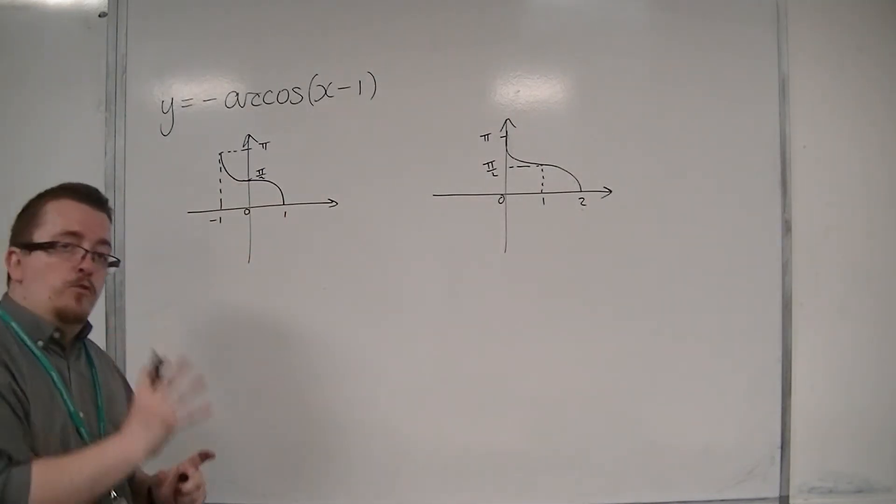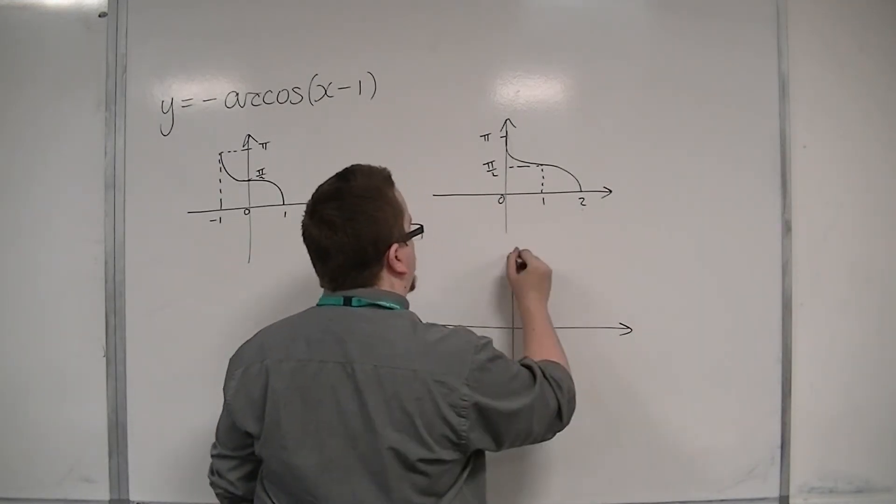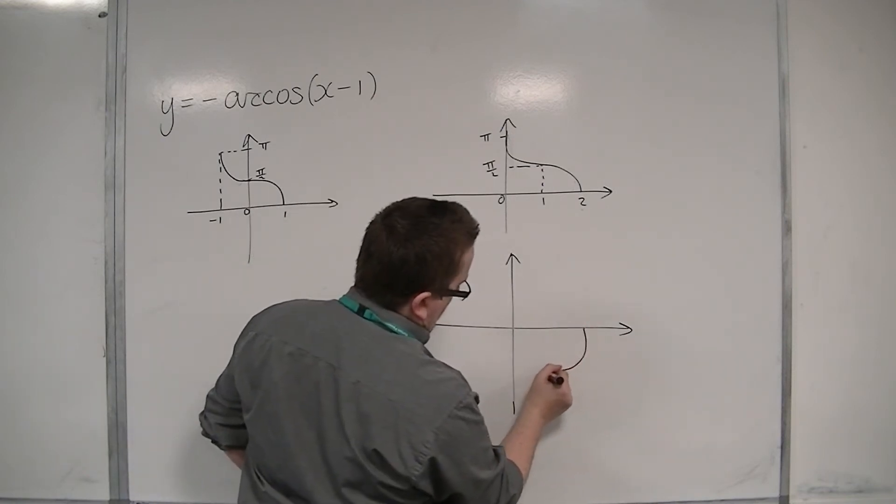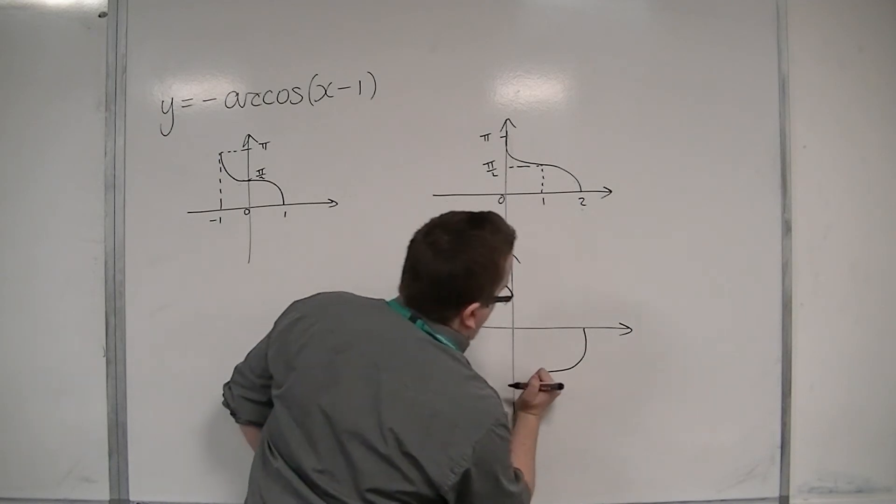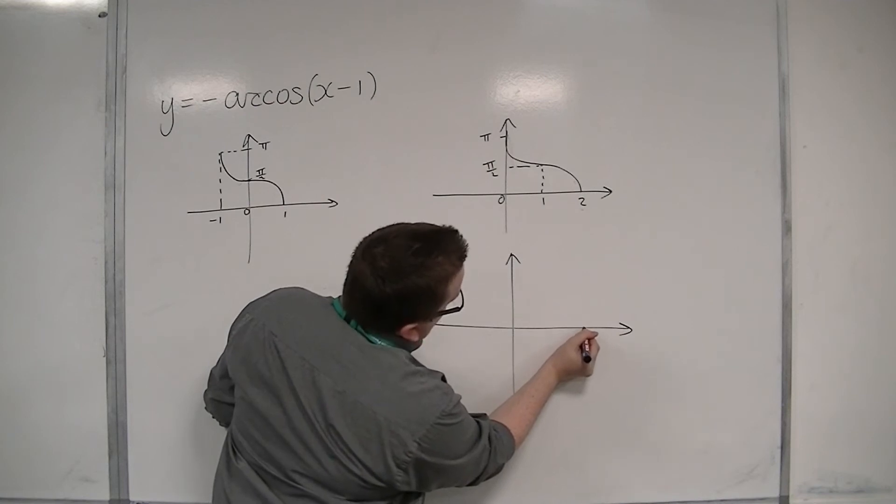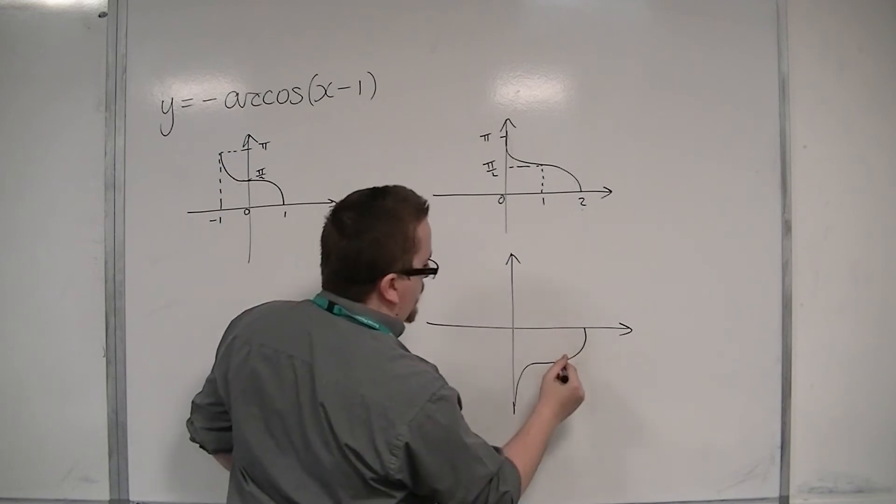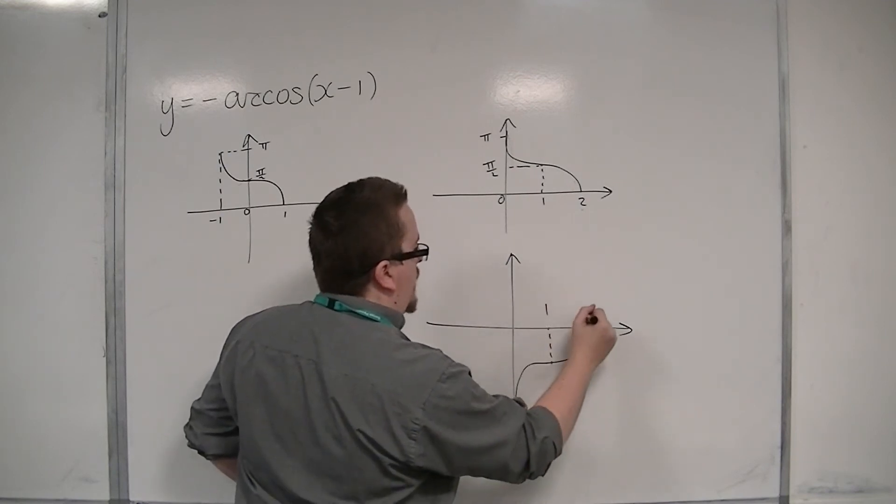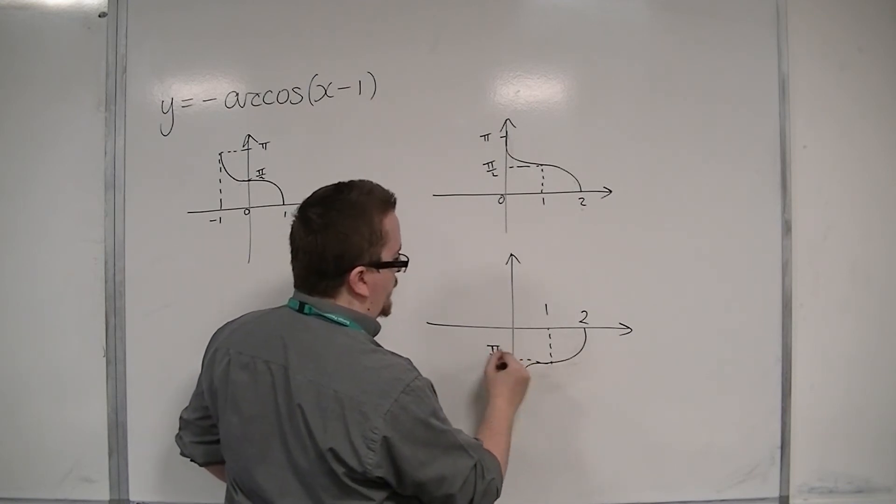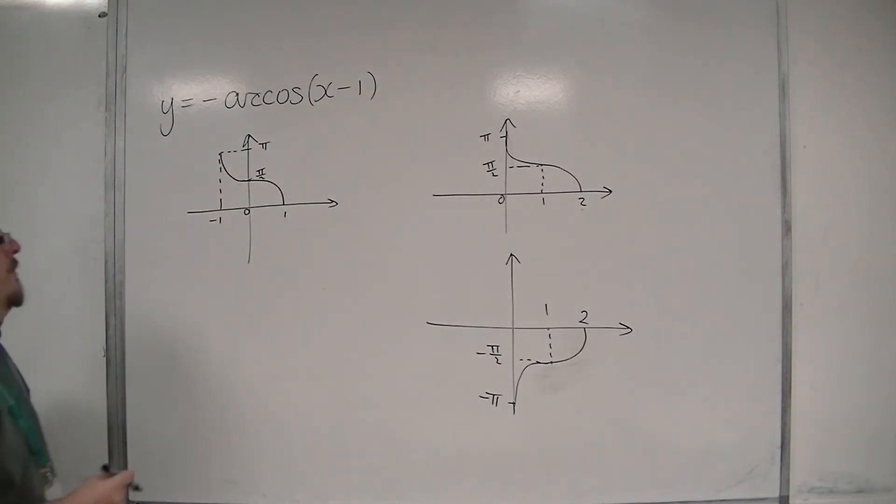And then, we're going to reflect it in the x-axis. Okay, so we're going to have this point. It's going to look something like... not like that. Let's try it again. Something like that. My curve seems a bit shoddy. So, 1, 2. This point would be minus pi over 2, and this point is minus pi. So, it looks something like that.